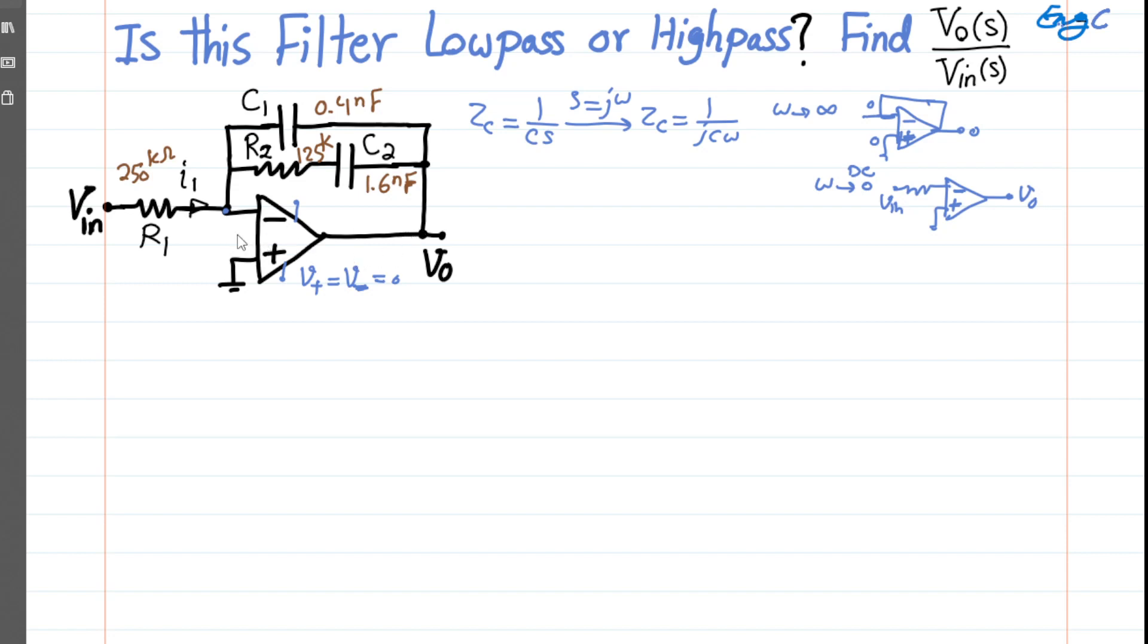With that in mind, this point is zero volt. This point is zero volt. The input current I1 cannot go through the negative input terminal because the ideal op amp has infinite input impedance. Therefore, this I1 has to go through the feedback, the total feedback impedance in this circuit. So I1 goes through that and comes out toward the output. I can write a KCL at this node.